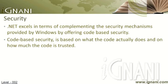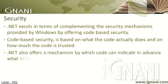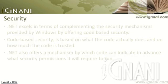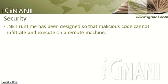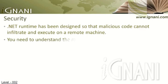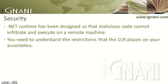Thanks to the strong type safety of intermediate language, the CLR is able to inspect the code before running it to determine required security permissions. .NET also offers a mechanism by which code can indicate in advance what security permissions it will require to run. The .NET runtime has been designed in such a way that malicious code cannot infiltrate and execute on a remote machine. If you deliver your software via the internet or an intranet, or running it directly from the web, you need to understand the restrictions that the CLR places on your assemblies.